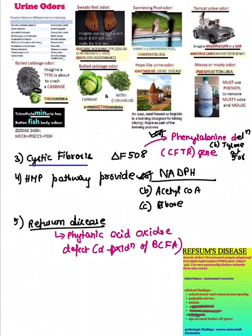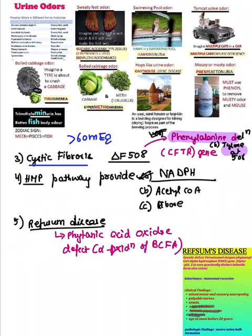The next question asked about the gene mutation in cystic fibrosis. We know cystic fibrosis involves a defect in sweat chloride — more than 60 milliequivalents. There is a mutation at the delta F508 position. The options included phenylalanine deletion at 508 and tyrosine deletion at 508. The answer is delta F508, which is the phenylalanine deletion.